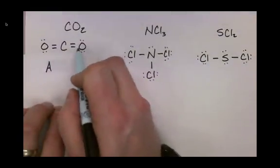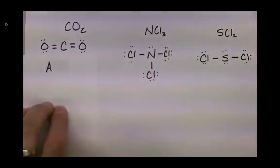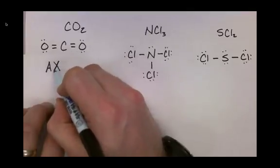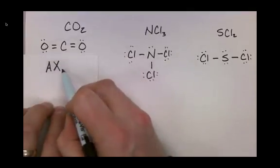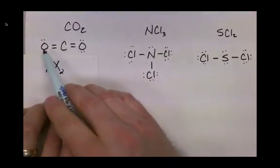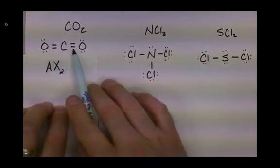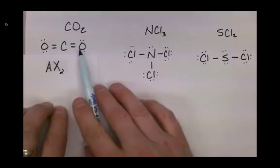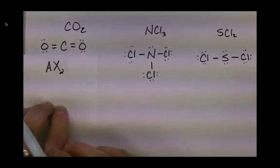There are two oxygen atoms bonded to the carbon atom, so we're going to represent that by X and put a subscript 2 on that to represent that there are two atoms bonded to the central atom. We are not counting how many lines — we are simply counting how many atoms are bonded to the central atom.